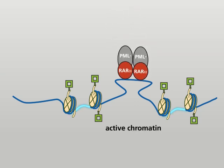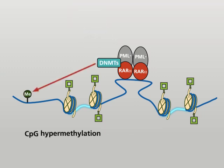The oligomers of the fusion protein associate with DNA methyltransferases. DNA methyltransferases silence genes by methylating CpG islands in promoter regions.